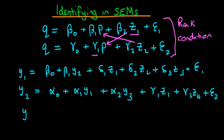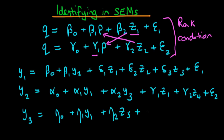Finally, our last simultaneous equation is y3 equals eta 0 plus eta 1 times y1 plus eta 2 times z3, plus error epsilon 3. We've now written down all three equations, and we might be interested in whether we can actually estimate each of the parameters in each of the separate equations. Let's go through each equation in turn.